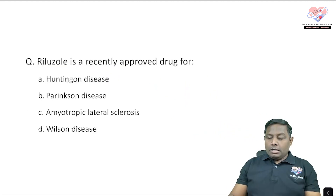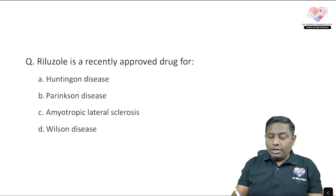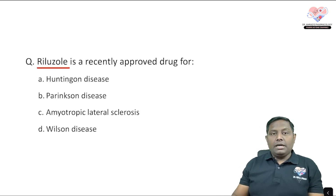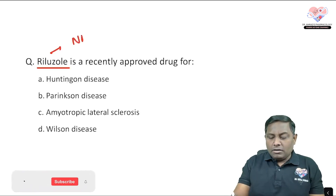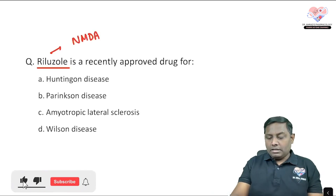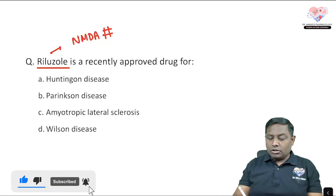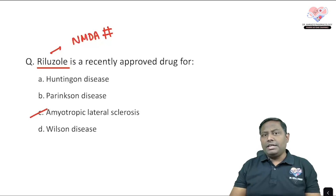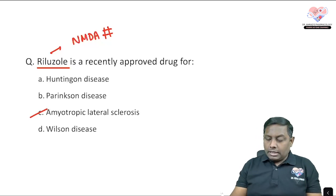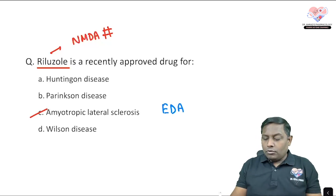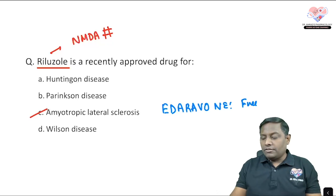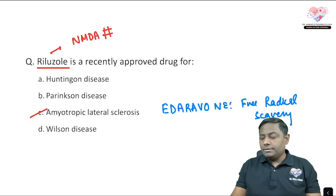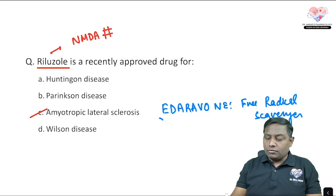Riluzole is a recently approved drug — it is an NMDA blocker approved for amyotrophic lateral sclerosis (ALS). In a 2017-18 AIIMS exam question, a drug called edaravone was asked about. Edaravone is a small molecule with free radical scavenging property, and it is also approved for ALS.